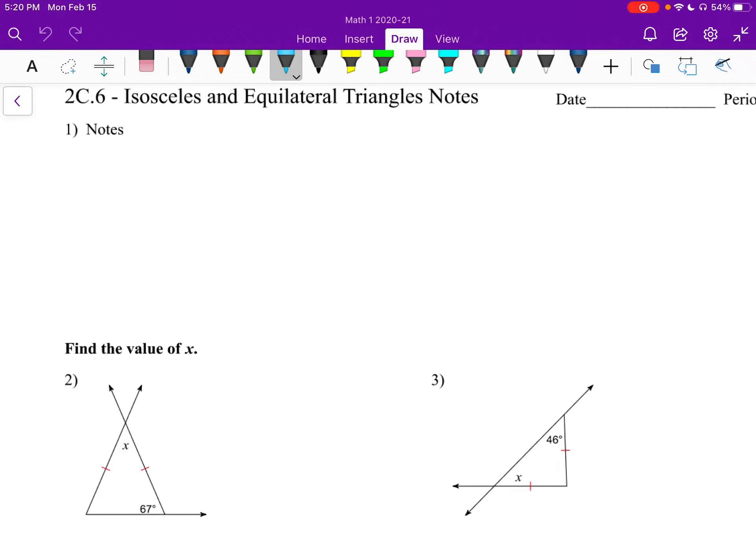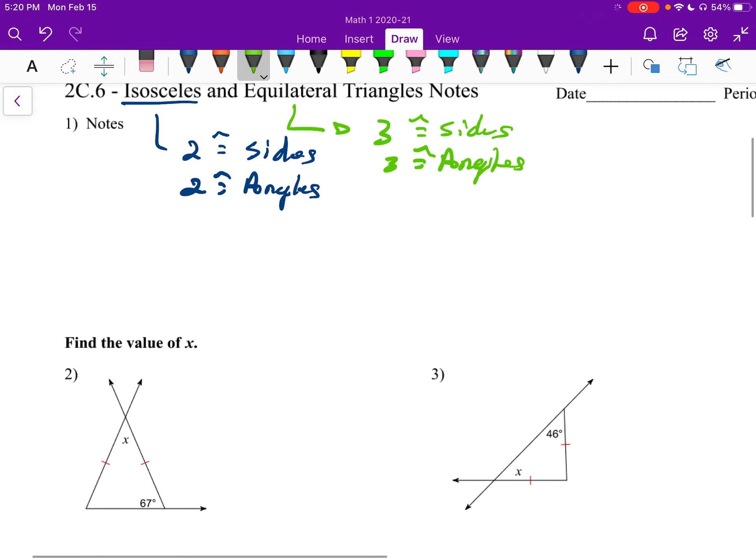Alright, isosceles and equilateral triangles. I believe we've already gone over it, but an isosceles triangle has two congruent sides and two congruent angles. An equilateral triangle has three congruent sides and three congruent angles. And that's really all we're going to need for this lesson.